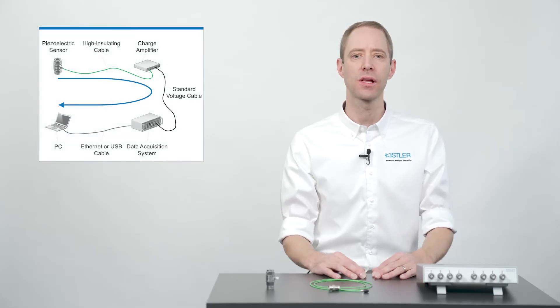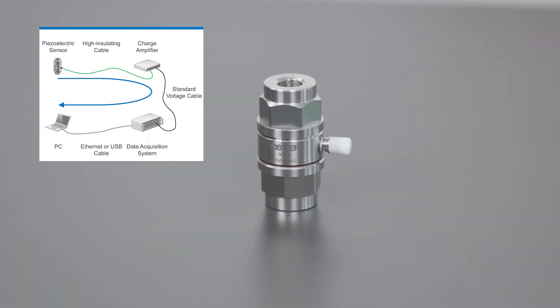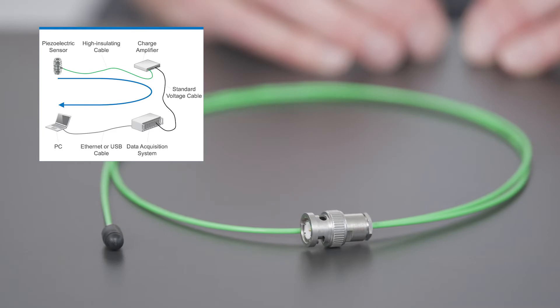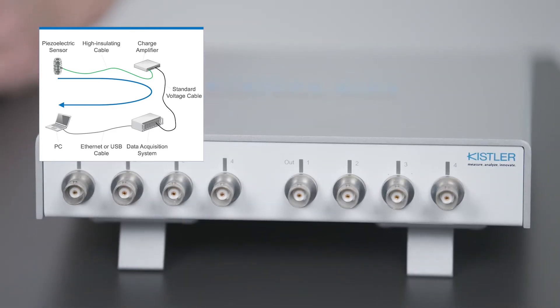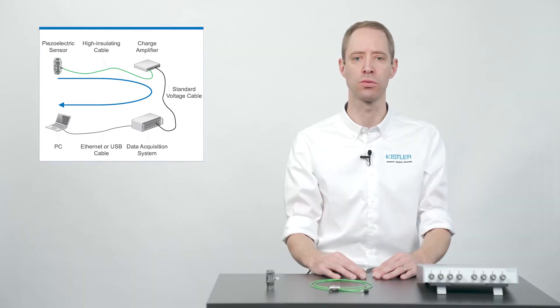Let's have a look at the typical piezoelectric measuring chain. A piezoelectric sensor is connected to a charge amplifier through a high insulating cable. The charge amplifier converts the charge generated by the sensor into a proportional analog output voltage.